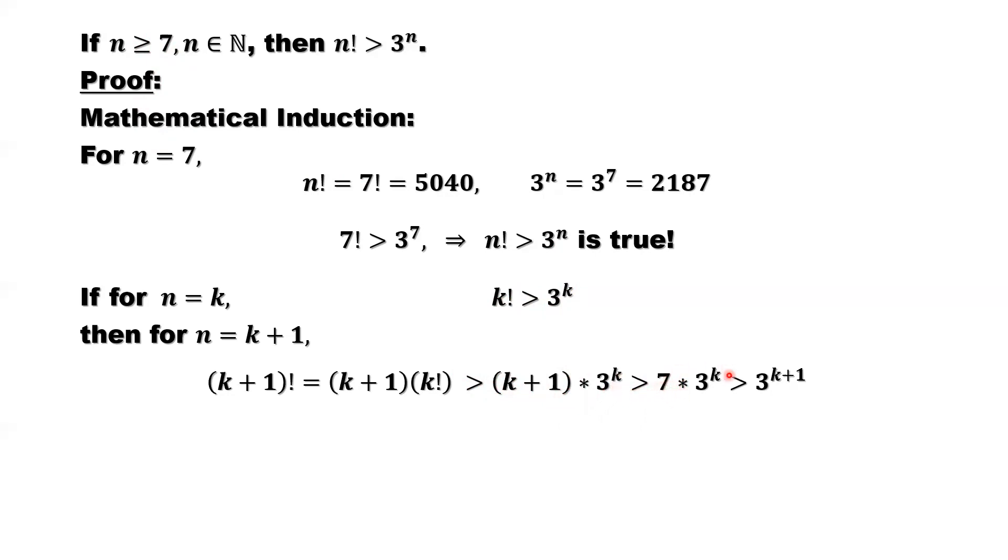So it should be bigger than. Continue to repeat. Same idea. We replace 7 by a smaller number. 3 times 3 to the power k is 3 to the power k plus 1. So this number should be smaller than this number.